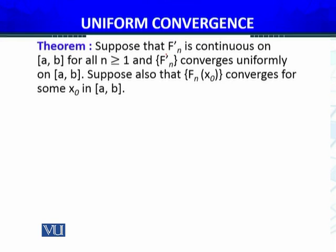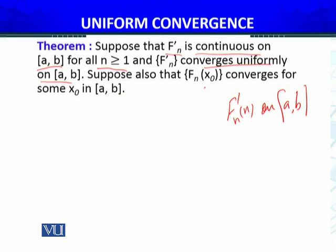The theorem states: suppose that fn' is continuous on the interval [a, b] for all n greater than or equal to 1. The sequence fn' converges uniformly on [a, b]. Suppose also that fn(x0) converges for some x0, where x0 belongs to [a, b] — the sequence of real numbers fn(x0) is convergent.